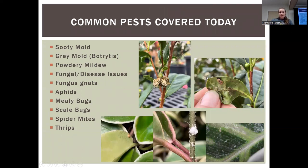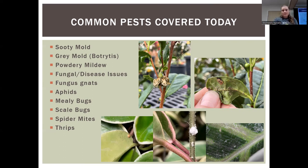So common pests covered today: a couple of fungi — sooty mold, gray mold also called botrytis, powdery mildew — lightly touching on other fungal and disease issues, fungus gnats, aphids, mealybugs, scale bugs, spider mites — that's the main of my existence right there — and of course thrips.